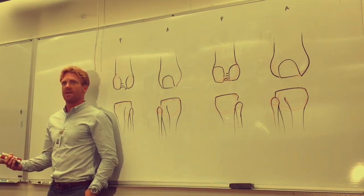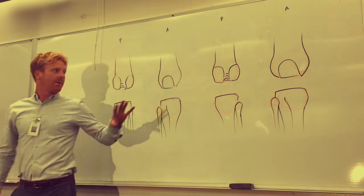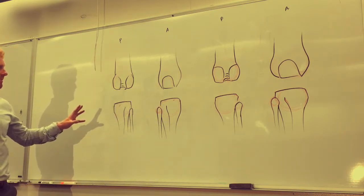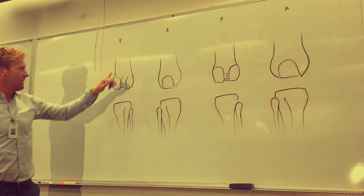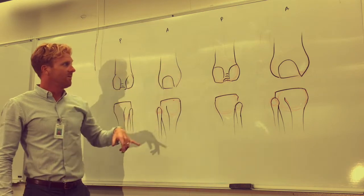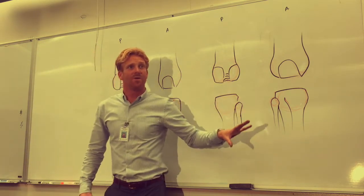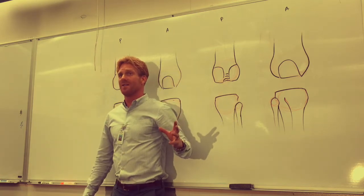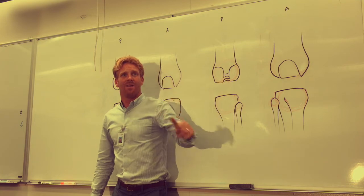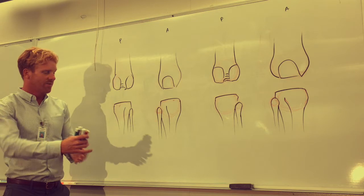Today I'd like to talk about the major ligaments and structures of the knee. I've drawn the right knee four different times — two views from the posterior and two from the anterior. On the first pair of illustrations I'll focus on the deep structures and ligaments, and on the second pair I'll focus on the more superficial structures.